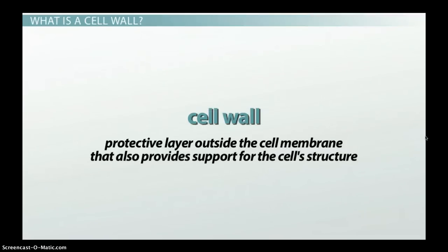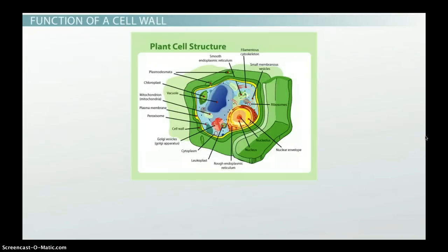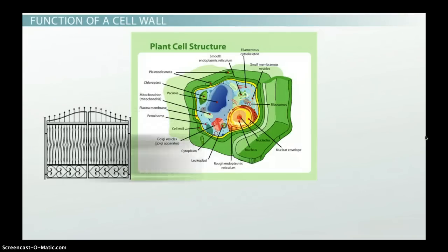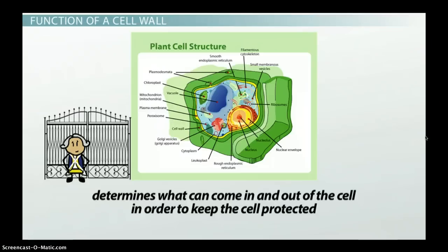The cell wall is a protective layer outside the cell membrane that also provides support for the cell's structure. The cell wall gives the plant its actual shape. It acts as a gatekeeper because it determines what can come in and out of the cell in order to keep the cell protected.